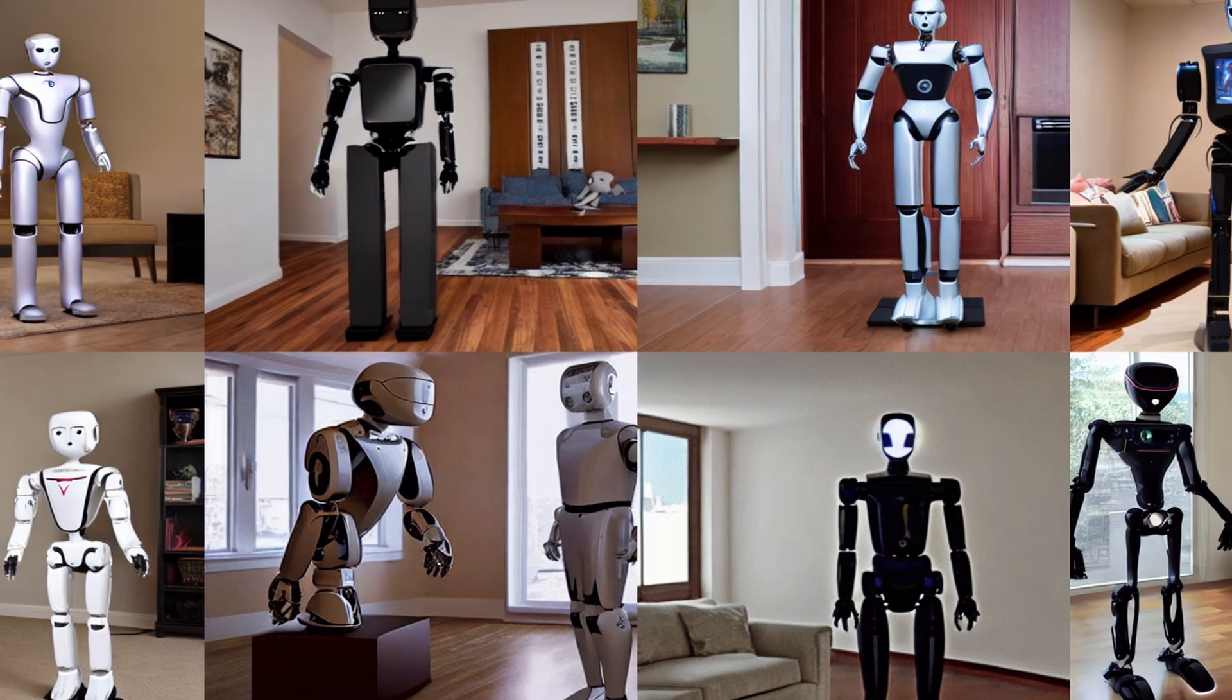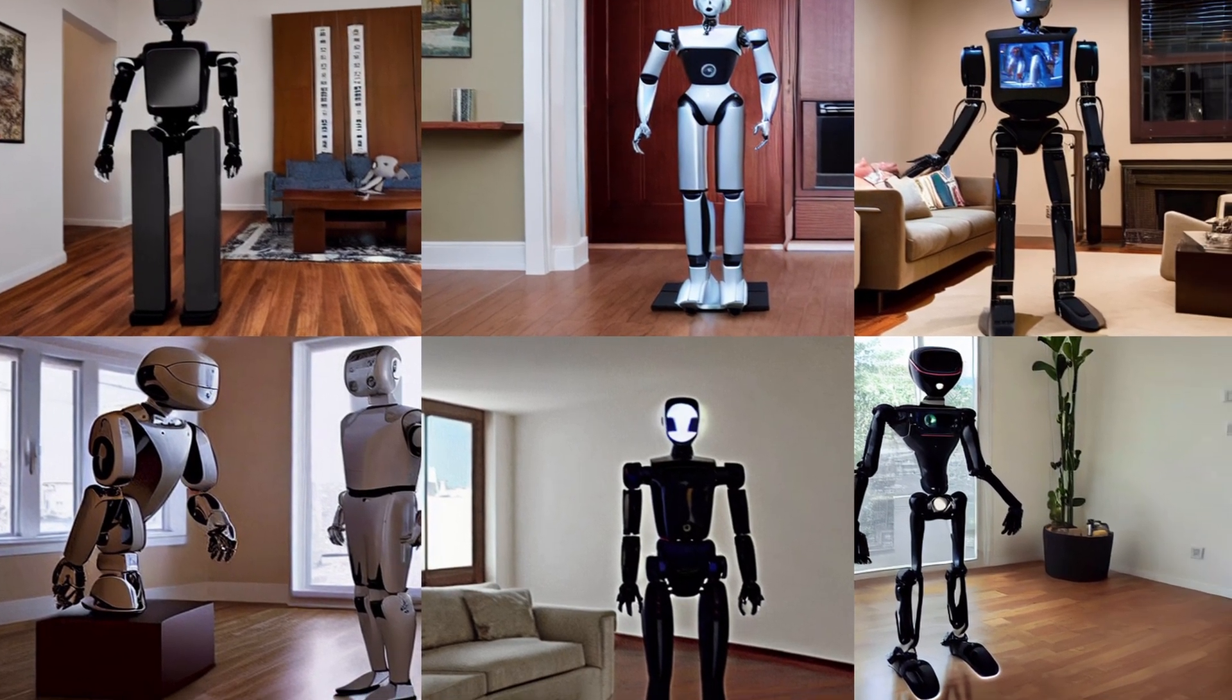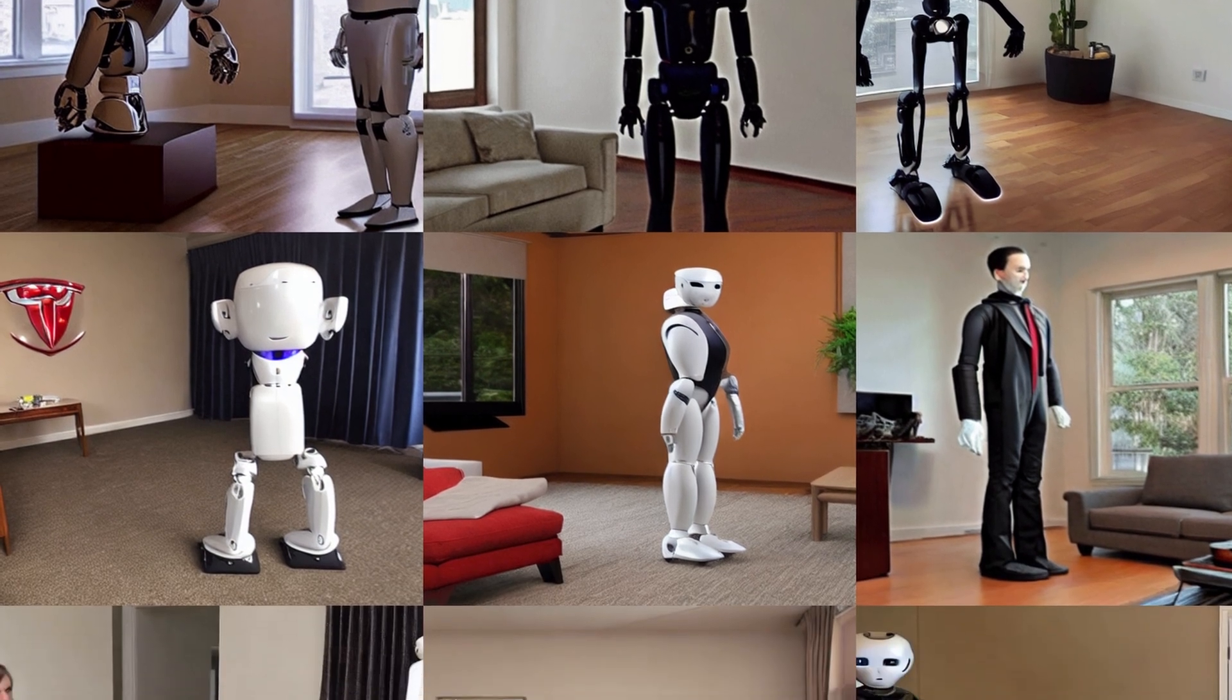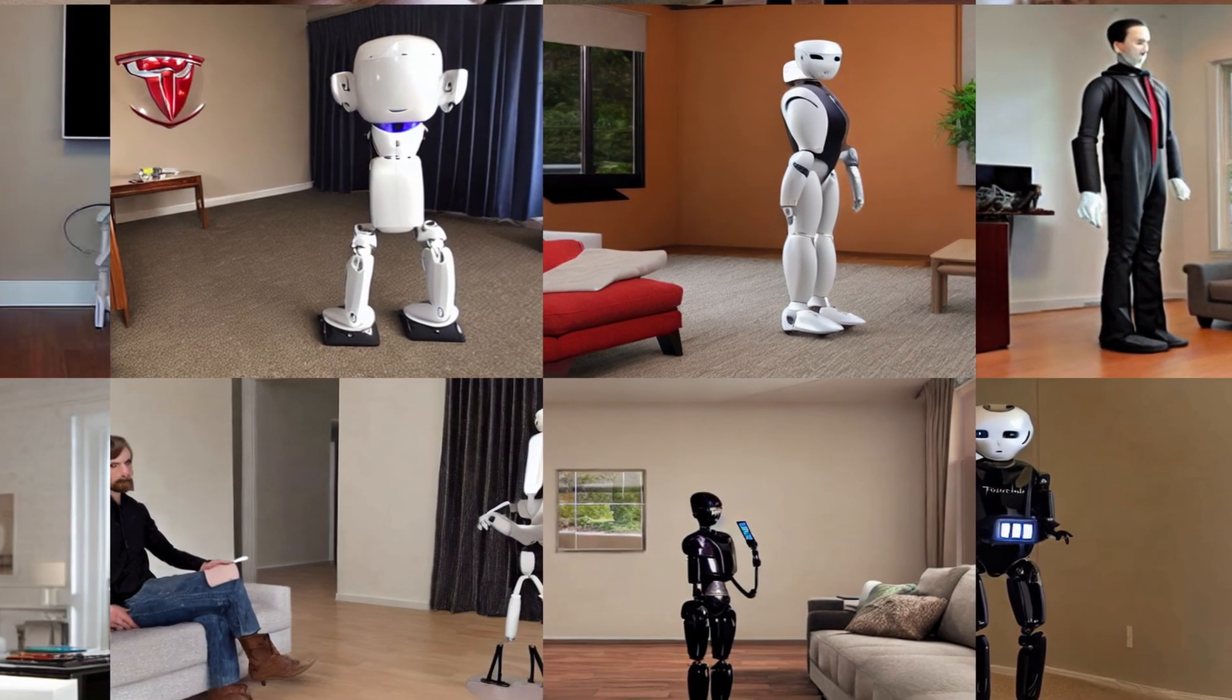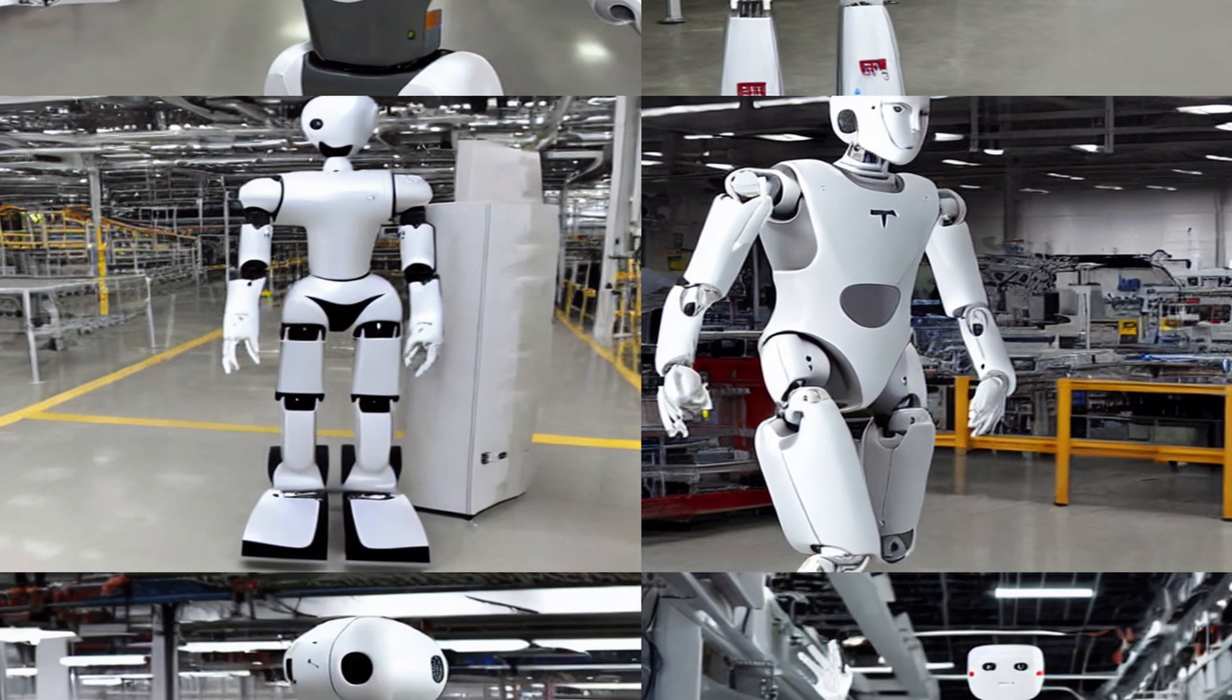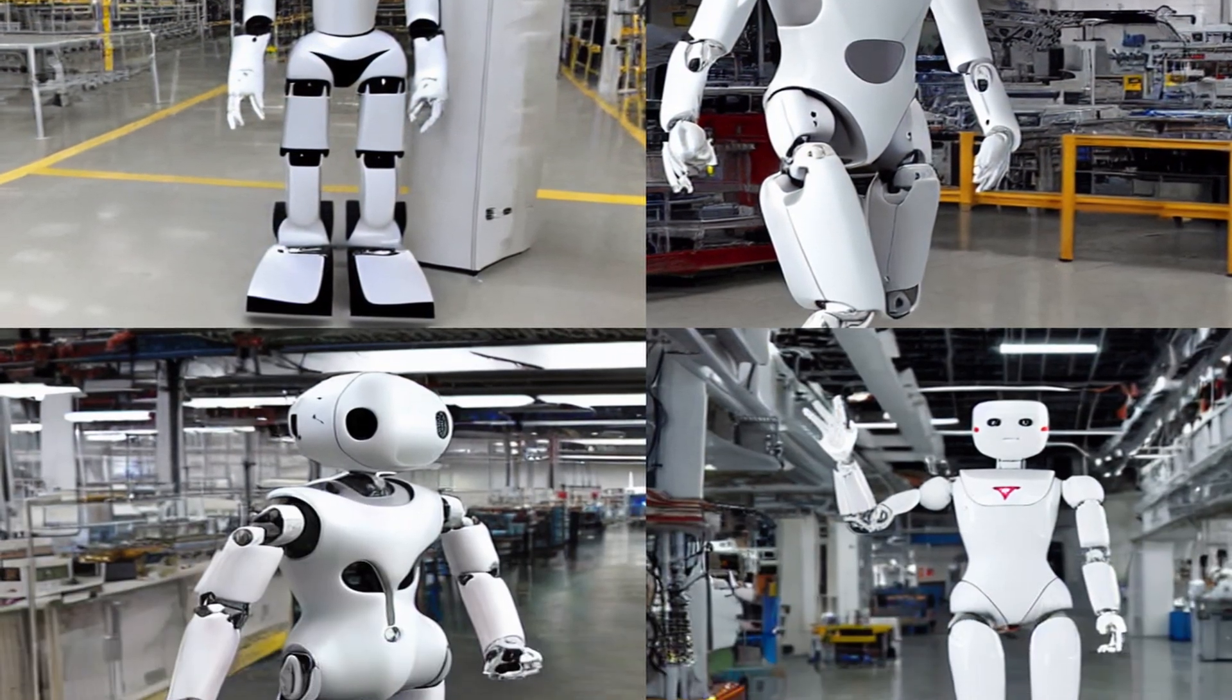Tesla's Optimus humanoid robot is being engineered to automate repetitive tasks with the goal of creating a future where physical labor will not be required, but rather be a choice. Elon Musk said that the robot will eventually impact the labor force in a way that creates jobs instead of eliminating them.